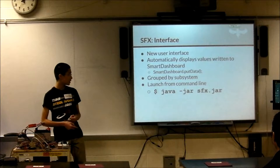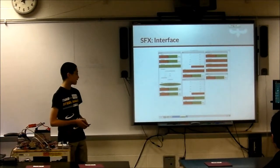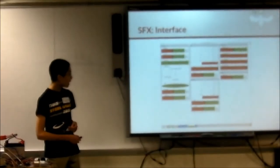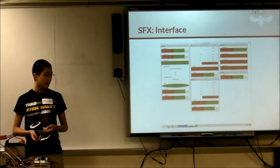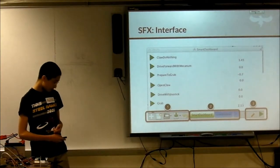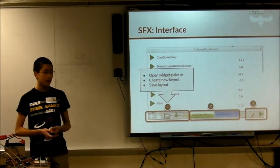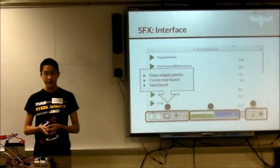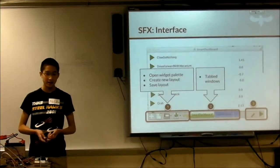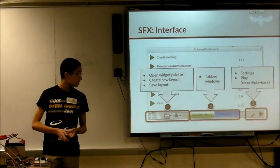This is the new interface. Smart Dashboard is quite new this year with a lot of new colorful settings. You can see it's grouped by subsystems, showing the drivetrain and then the elevator. Smart Dashboard will automatically group them together. New features include this bottom toolbar, allowing you to open a widget palette for different widgets, create a new layout for Smart Dashboard, save or open layouts. The different tabs are very similar to browser windows. And there's settings on the play record functionality. That play button will open up into a whole new playback feature.